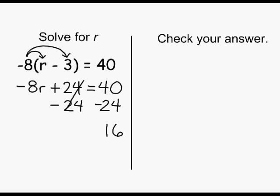Because we cancelled out the opposite integers, positive and negative 24, that leaves us with negative 8 times r on the left hand side of our equation. Because our goal is to end up with positive 1r, we have to figure out how to change that negative 8 into positive 1.